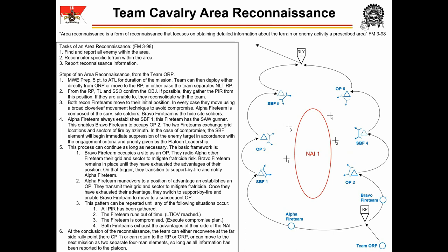The team leader now gives a single five-point contingency plan to the ATL, which is in effect for the duration of the mission. This plan will be slightly different from previous ones covered in the lesson on occupation of the ORP, and by necessity includes actions on compromise. For clarity, I'll first give the five-point, explain the rest of the mission, and then circle back for a detailed explanation of the compromise plan.